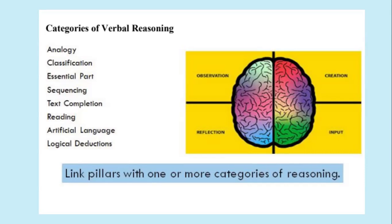With both of these type reasoning, quantitative and verbal reasoning, you must link one or more categories of reasoning, such as observation, reflection, creation, and input.